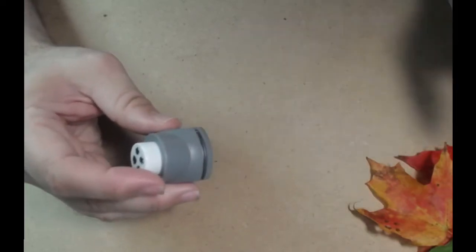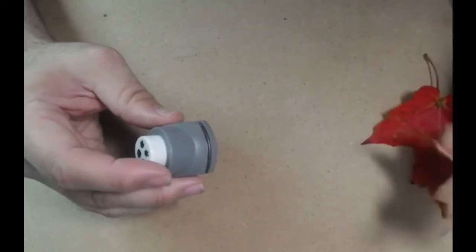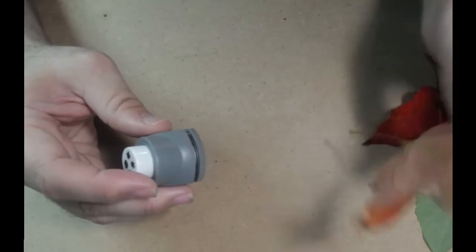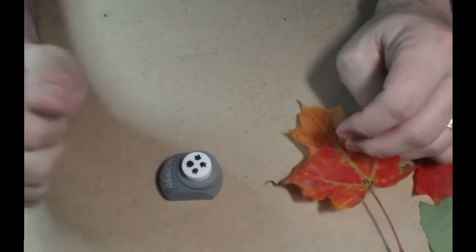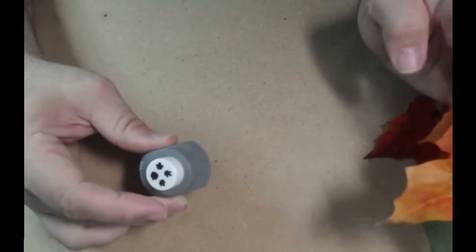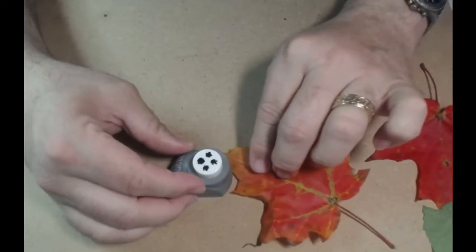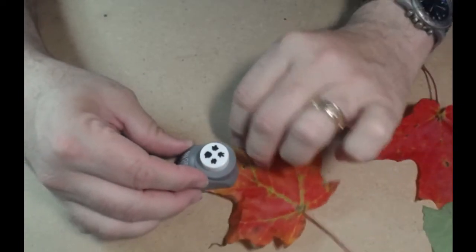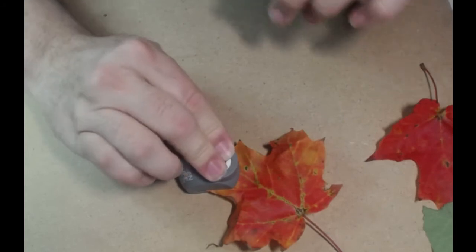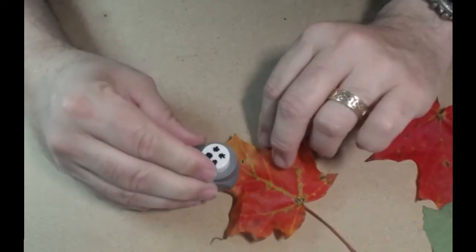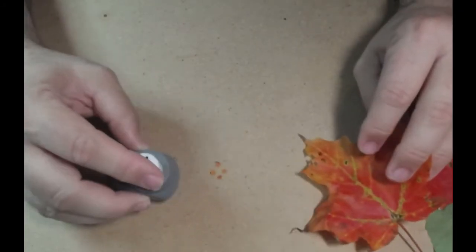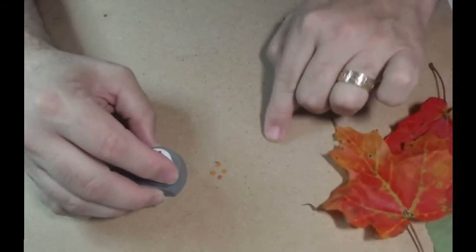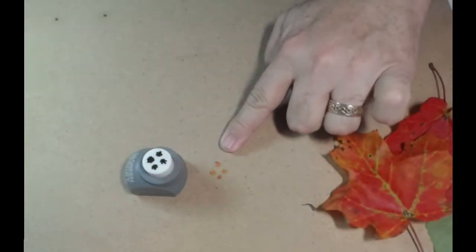So basically, fairly simple operation. You can take an actual leaf if you want. The manufacturer does recommend you use dried leaves. I'm going to use just ones I picked up here in the front yard today. And you put it in, press the button, and I'll move it around a bit. And then basically, as you can see, you've got some little, little tiny leaves there.